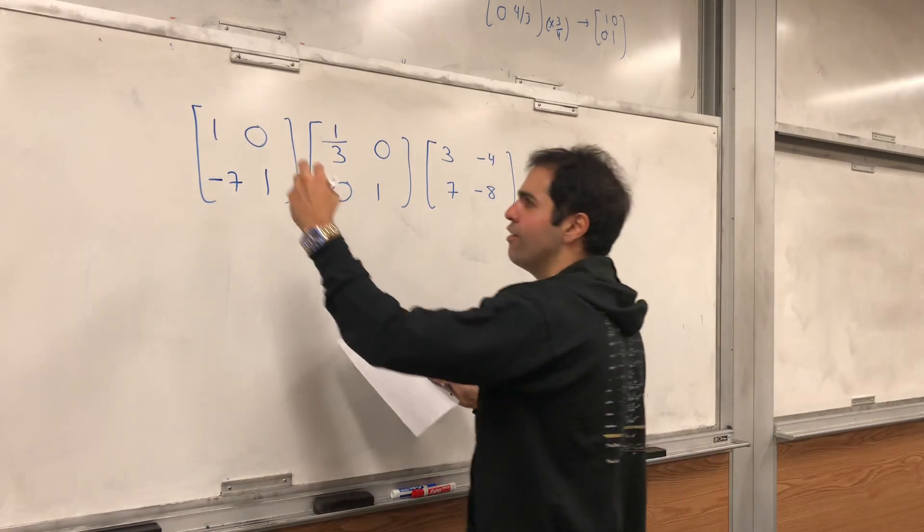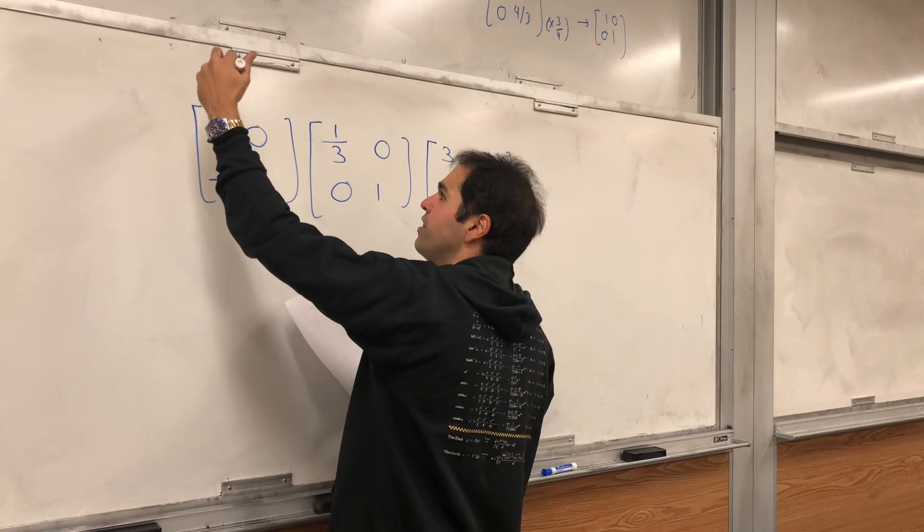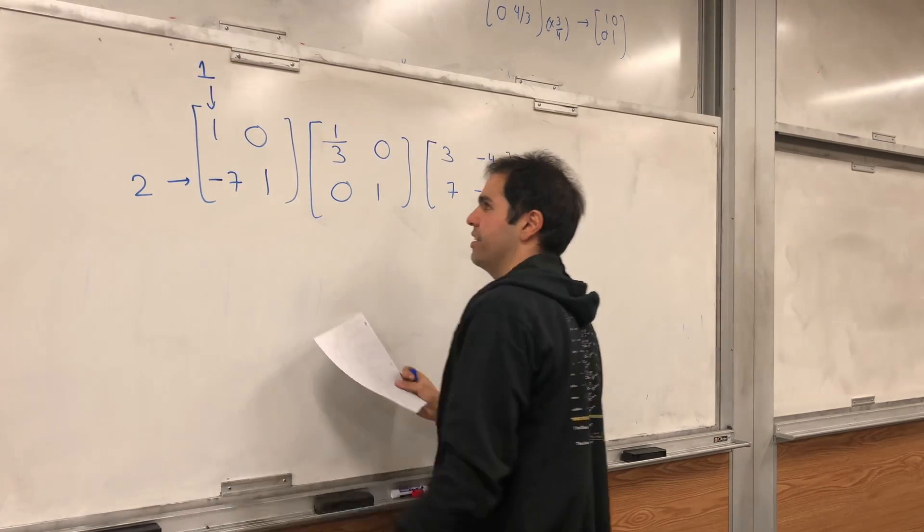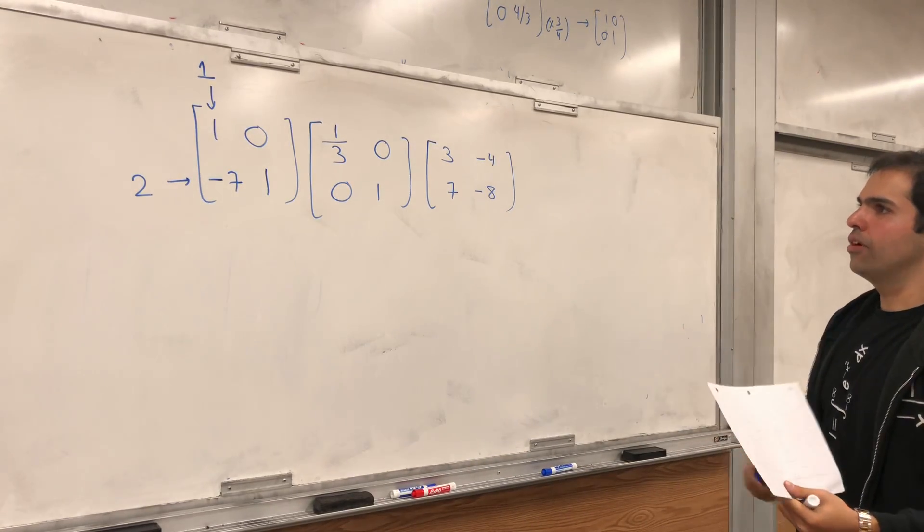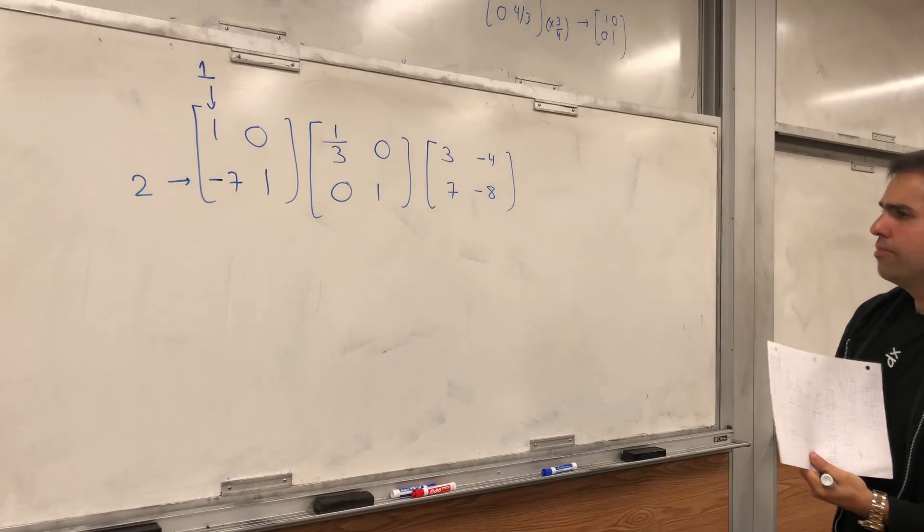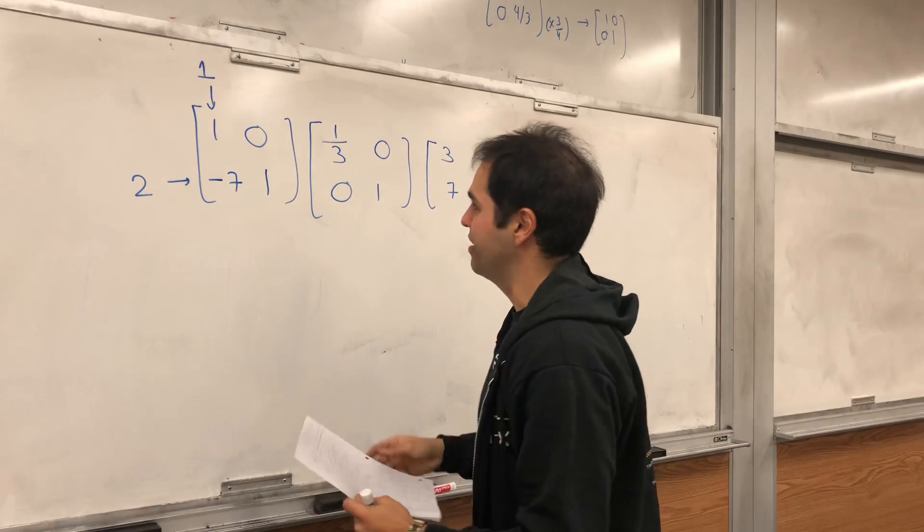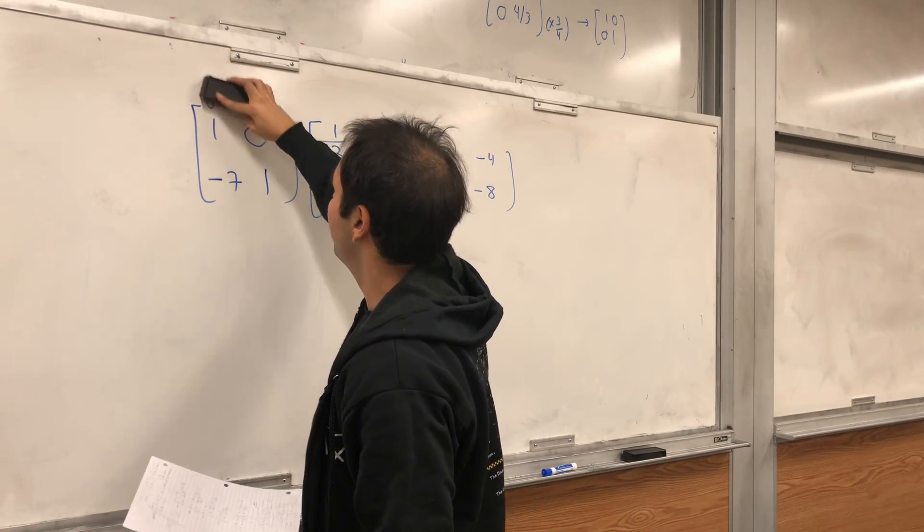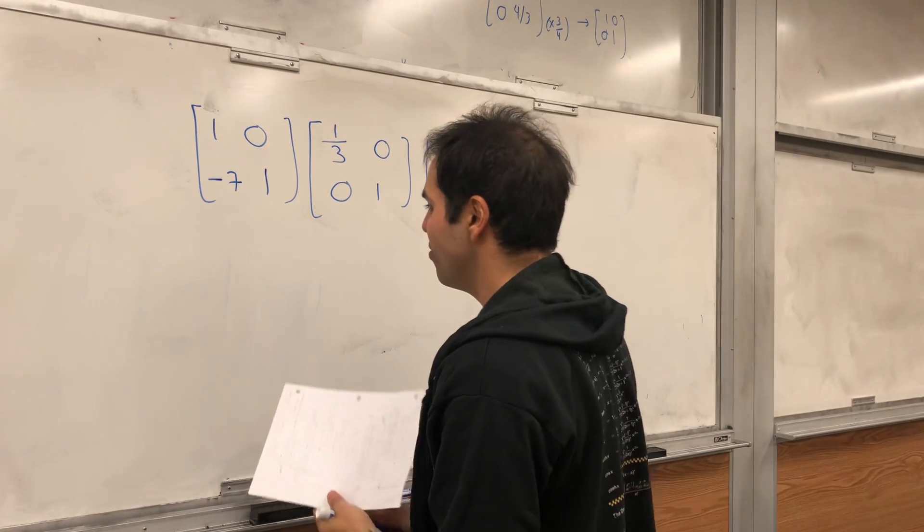So, basically the first column is minus something times what? And to what row is second. So, if you add, let's say, minus 3 times the second row to the third row or something, it would be like the 3 comma 2 entry. So, this is the second thing. And then, what was the next thing?